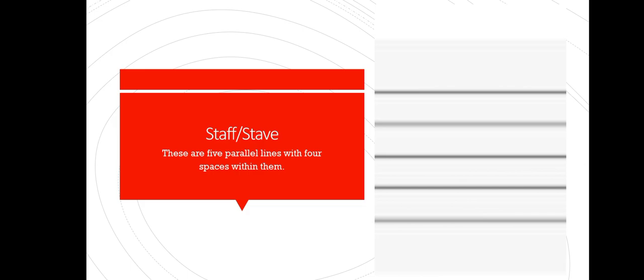First of all, we have a word called 'staff,' also called 'stave.' These two words mean the same thing. A staff is five parallel lines with four spaces within them. As you can see on the right-hand side, there are five lines which are parallel — you can count them: one, two, three, four, and five. And within them there are four spaces. So those five parallel lines with four spaces within them are what is called a staff, also called a stave.